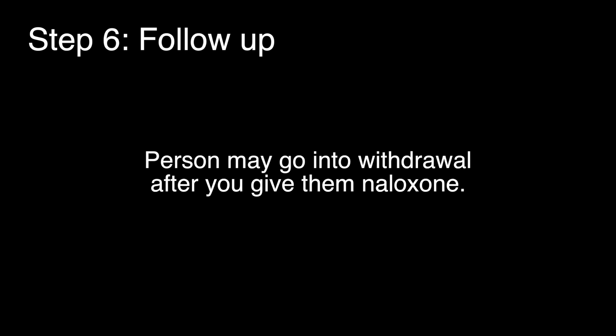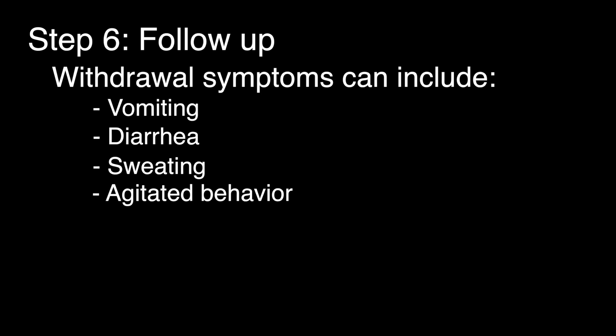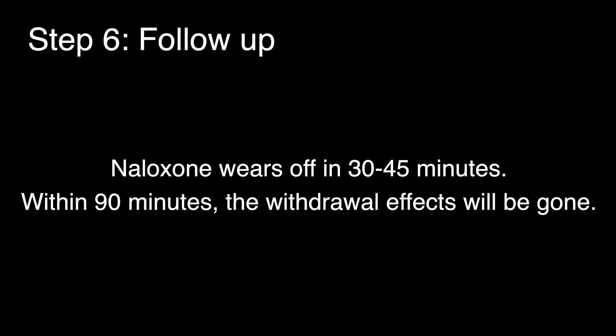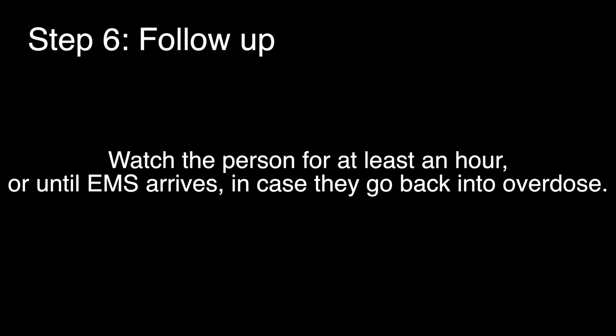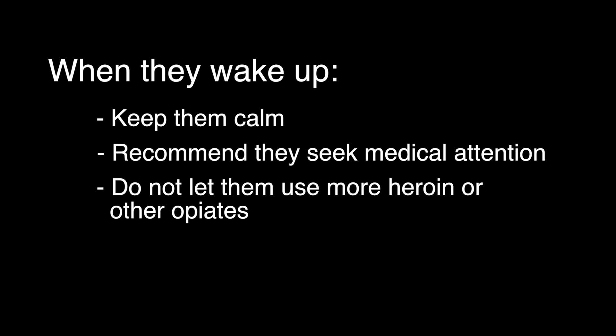Step 6: Follow-up. If the person is dependent on heroin or other opiates, they may go into withdrawal after you give them naloxone. Withdrawal symptoms can include vomiting, diarrhea, sweating, and agitated behavior. This may be unpleasant and dramatic, but it is not life-threatening and only lasts until the naloxone wears off. Tell them that naloxone wears off in 30 to 45 minutes and there are still drugs in their system. Within 90 minutes, the withdrawal effects will be gone. Watch the person for at least an hour or until emergency medical services arrive in case they go back into overdose. When they wake up, keep them calm. Recommend they seek medical attention. Do not let them use more heroin or other opiates — the naloxone will block it and they can overdose again once the naloxone wears off.